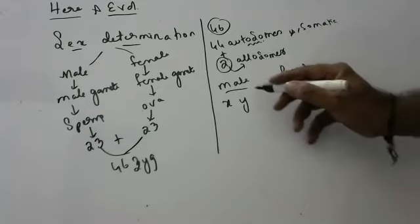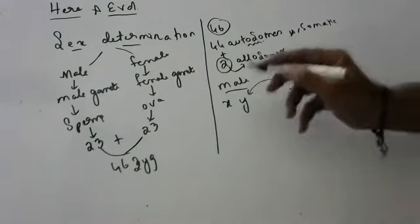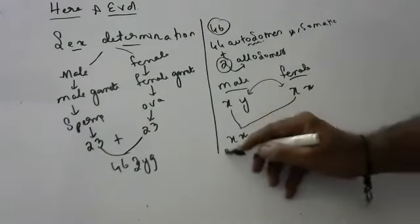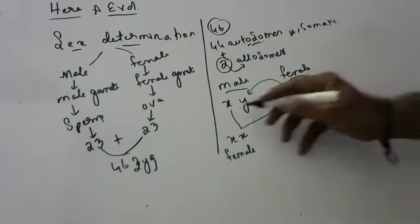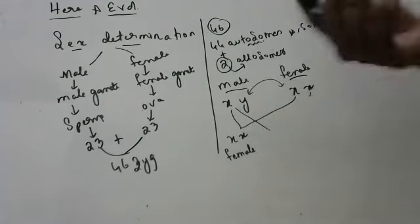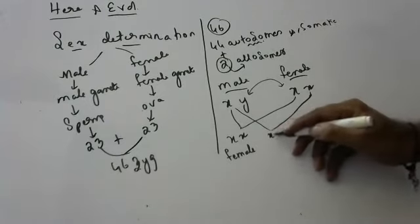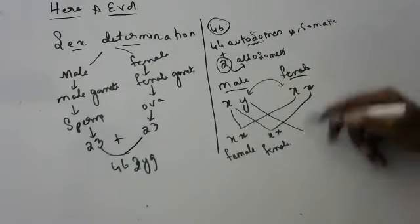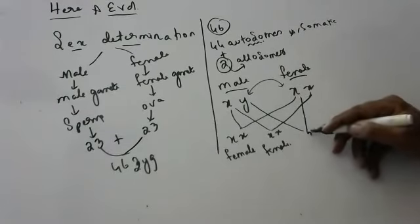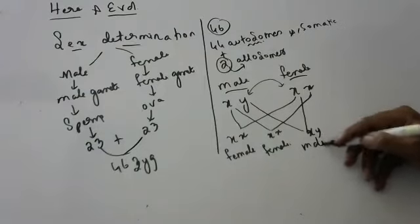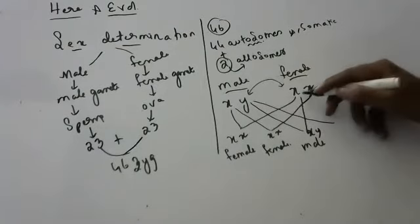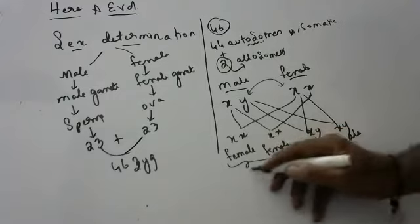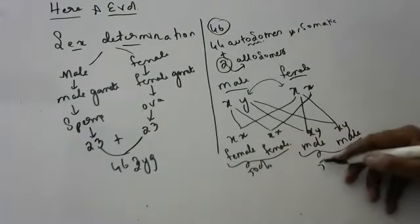During fertilization, sperm and ova unite. If X from male combines with X from female, an XX female baby comes. If Y from male combines with X from female, a male baby comes. So there are four options — 50% chance of female and 50% chance of male.